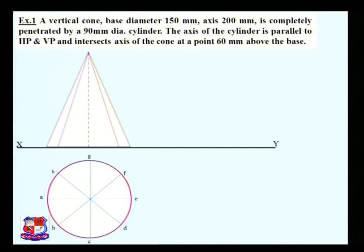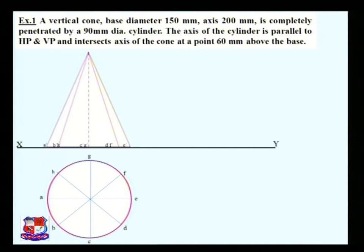Draw the front view by taking projections from the top view — draw vertical lines from a, b, c, d, and so on. The height of the cone is 200 mm, so the height of this triangle is 200 mm. Name the respective dash points: a', b', c', up to g' and h'. Draw a miter line — a line drawn to the right or left side of the top view — to take projections for the side view.